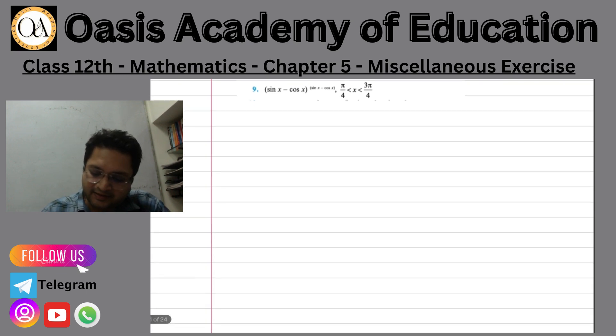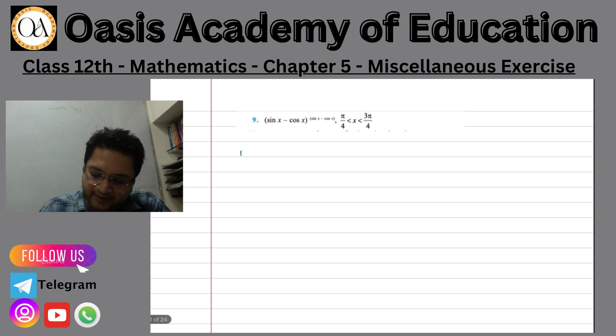We are moving on to the next question. The question says that y is equal to sin x minus cos x to the power sin x minus cos x. If you remember, we have applied a simple concept that when we keep the term of a variable, we take the term of log. So what will we do?